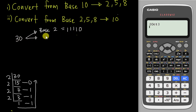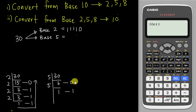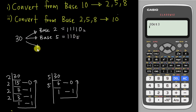If I want to convert 30 into base 5, I do the same thing: 30 divided by 5 gives 6 remainder 0. Then 6 divided by 5 gives 1 remainder 1. Then 1 cannot divide by 5, so reading bottom to top gives 110 base 5.